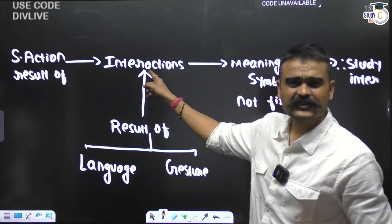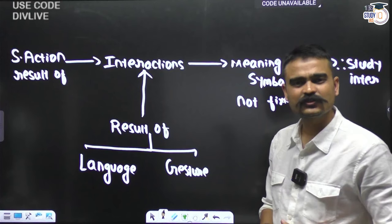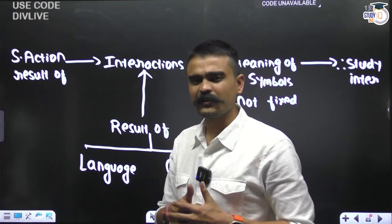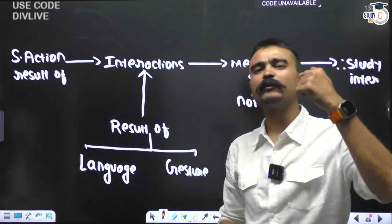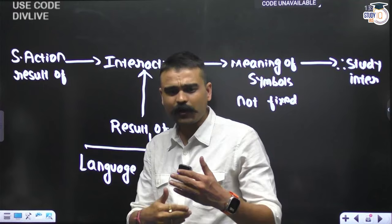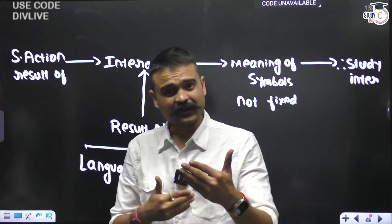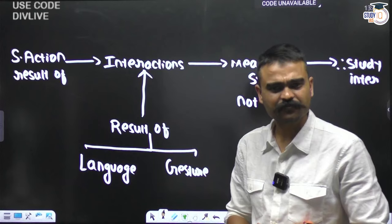To ensure this interaction takes place, symbolic interactionists advocate there are certain significant symbols such as language, and there are certain generalized symbols such as gestures. If I am showing this gesture, there is a meaning attached to it for you. When we speak language - when we use a word - you understand what I want to say; you understood the same meaning that I conveyed. Social action is possible only because of interactions, and interaction is possible only because of language and gestures. Until you commonly understand language or gesture, perhaps you will not be able to understand each other's aspects and demands. Until you are able to understand, you will perhaps not carry out that action, because until there is interaction there is no action, and interaction does not happen without these.